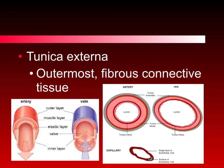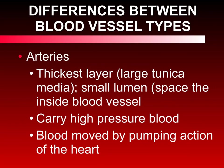Both arteries and veins have all three layers, but the thickness of the layers varies, especially the tunica media, which is the middle layer. The capillary, on the other hand, only has one layer. It is only one layer thick, because the capillary's job is gas exchange — it needs to be thin enough so things can pass through easily. Arteries have the thickest tunica media, which creates a smaller lumen. The tunica interna and tunica externa are pretty much the same width in arteries and veins, but the tunica media is much thicker in arteries.